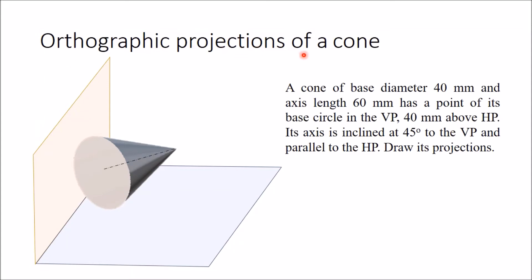In this orthographic projection of a cone, a cone of base diameter 40 mm and axis length 60 mm has a point of its base circle in the VP and 40 mm above HP. Its axis is inclined at 45 degrees to the VP and parallel to HP. Draw its projections. When a solid has its axis inclined to one plane and parallel to the other, its projections are drawn in two stages.